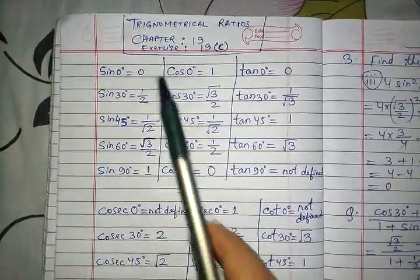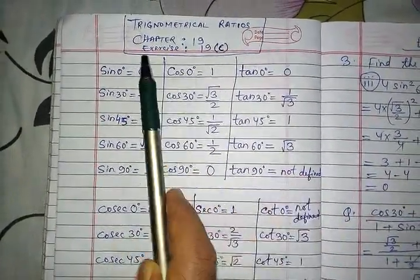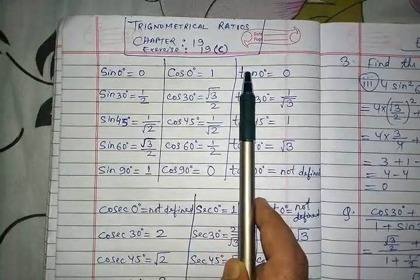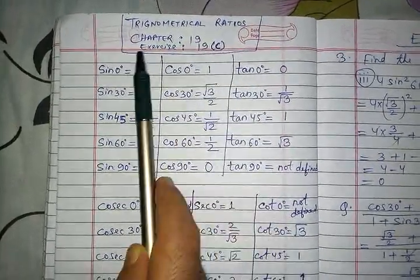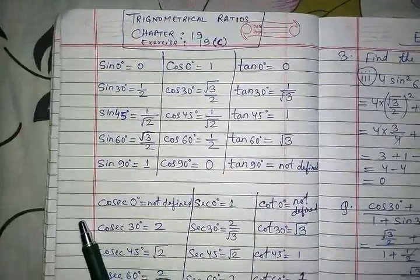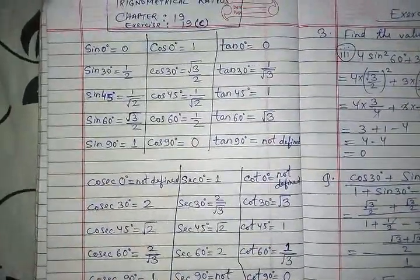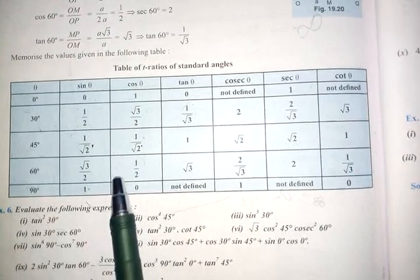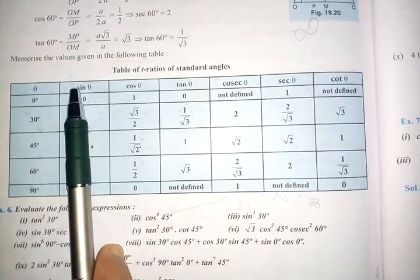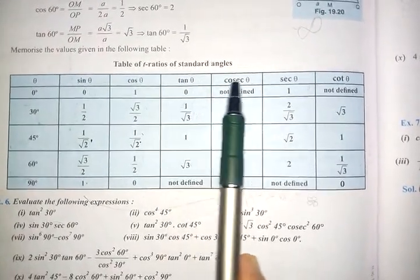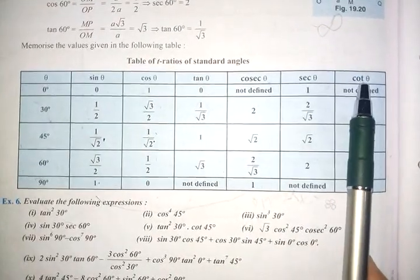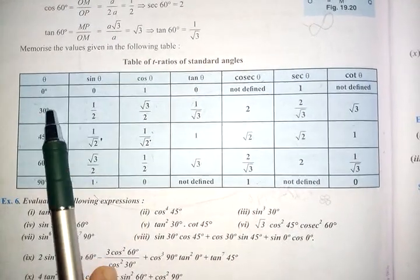Class 9 children, today we will learn the same chapter but a different exercise. In the last video we learnt 19b, today we are going to learn 19c. I have made a table here, but before I start, you need to come to your textbook page number 1910 where you will find this table. In this table, I will show you the values of sin theta, cos theta, tan theta, cosec theta, sec theta, and cot theta at different degrees.